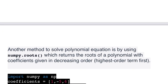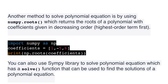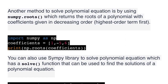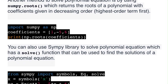Another method to solve a polynomial equation is by using numpy.roots(), which returns the roots of a polynomial with coefficients given in decreasing order — highest order term first. For example: import numpy as np; coefficients = [1, -5, 6]; print(np.roots(coefficients)).